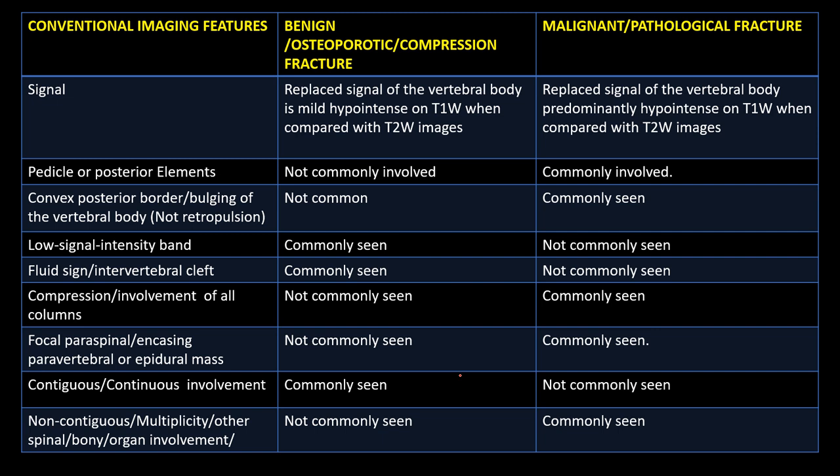These are the conventional MRI features helping to differentiate benign from malignant fractures. In benign fractures, normal signal intensity is preserved in the marrow with abnormal signal only at the fracture site. In malignant or pathological fractures, the whole vertebral body is replaced by predominantly hypointense signal on T1-weighted imaging. Pedicular and posterior element involvement is commonly seen in malignant fractures, not benign. Convex posterior vertebral border is commonly seen in malignant fractures, not commonly in benign.